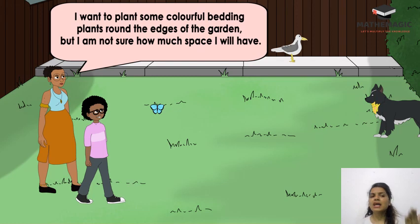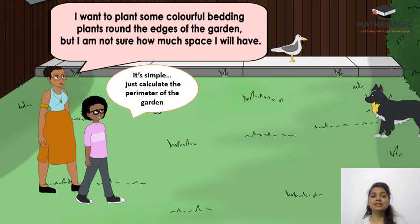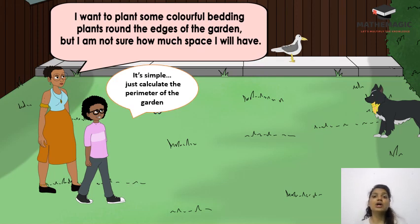Here is an example: an aunt wants to put some flower bedding around the edges of the garden, but she is not sure how much space will be required. The solution is to find the perimeter of the garden — in this way we will know how much space is actually required to cover the boundaries.